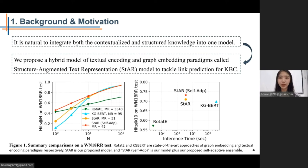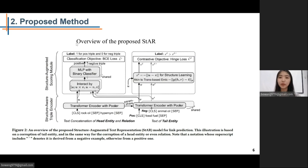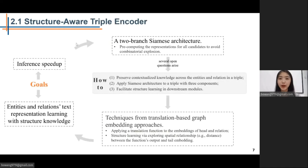This figure shows a summary comparison on a benchmark. Our proposed model and its variants actually show better performance and obviously reduce the inference time comparing with KG-BERT. Now let's see the details of our proposed method, STAR. This is an overview of STAR. It consists of two modules: Structure-Aware Triple Encoder and Structure Augmented Scoring Module. Our proposed model is based on transformer encoder. In this module, we aim at encoding a graph triple into vector representations in latent semantic space, with consideration of inference speedup and subsequent structure learning.